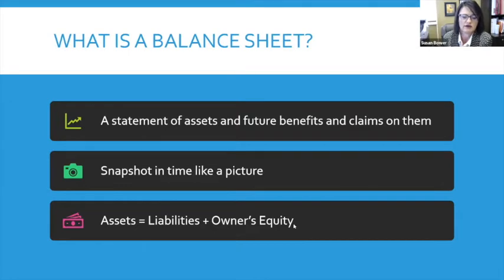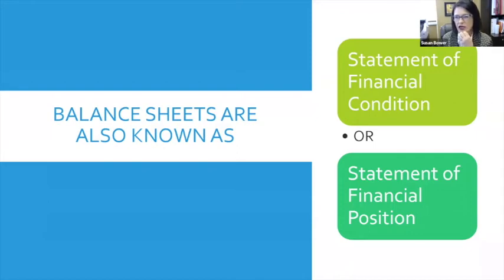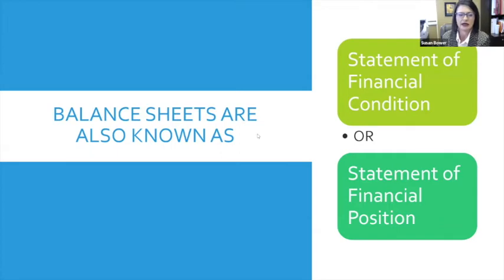We'll look at what each one of these terms means as well. Balance sheets are also known by two other names, though this is less common today than it was a decade ago. Occasionally you'll still see the term 'statement of financial condition' or 'statement of financial position.' Those terms are equivalent to balance sheet, but largely today the term 'balance sheet' is used to look at our assets, our liabilities, and our equity.